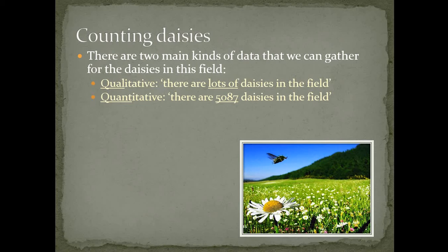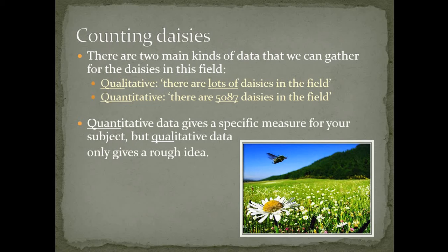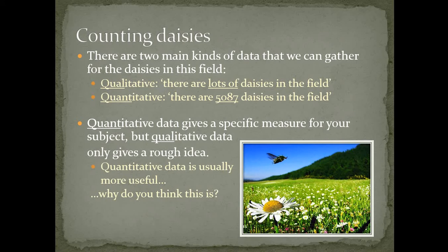We could go onto the school field and count every single daisy and say there are 5,087 daisies — a very specific number we can analyse and use for various calculations, giving us a quantifiable number. But qualitative data lacks that detail. Quantitative data gives a specific measure of your subject, while qualitative data only gives you a rough idea. So quantitative data is usually more useful as it provides us with more detail.